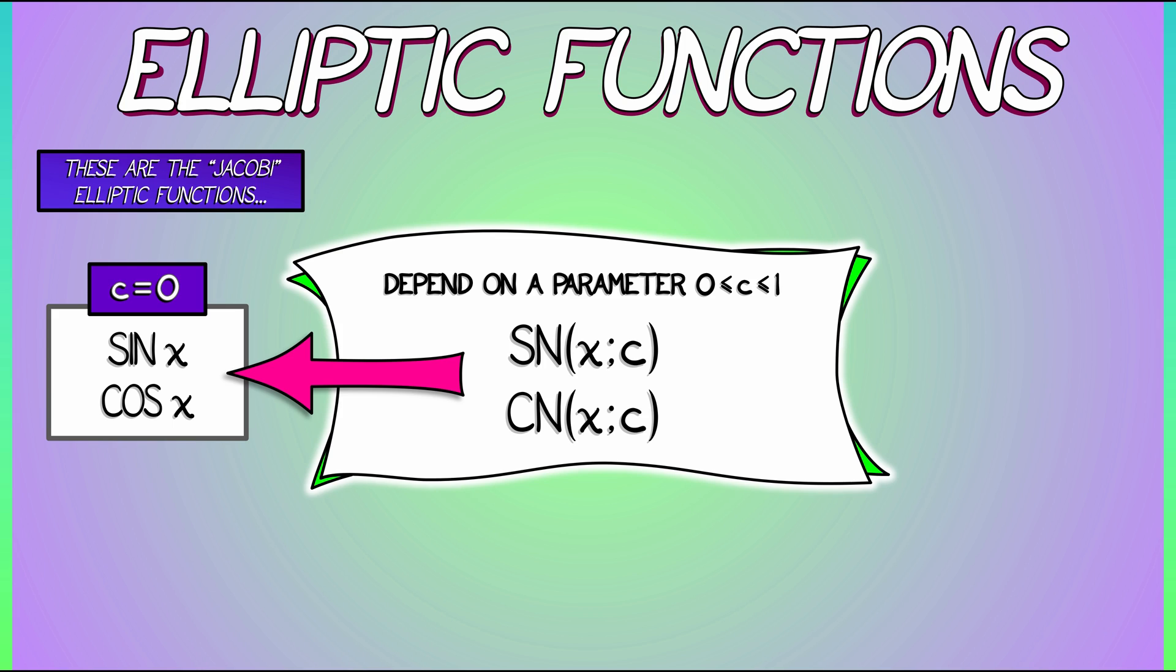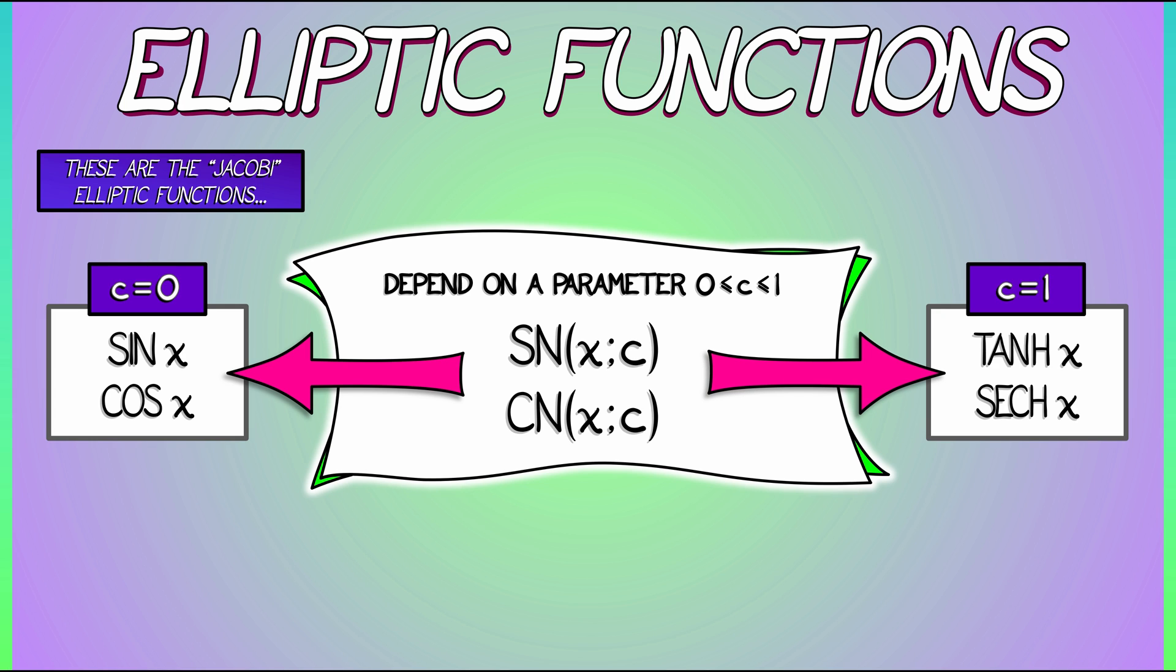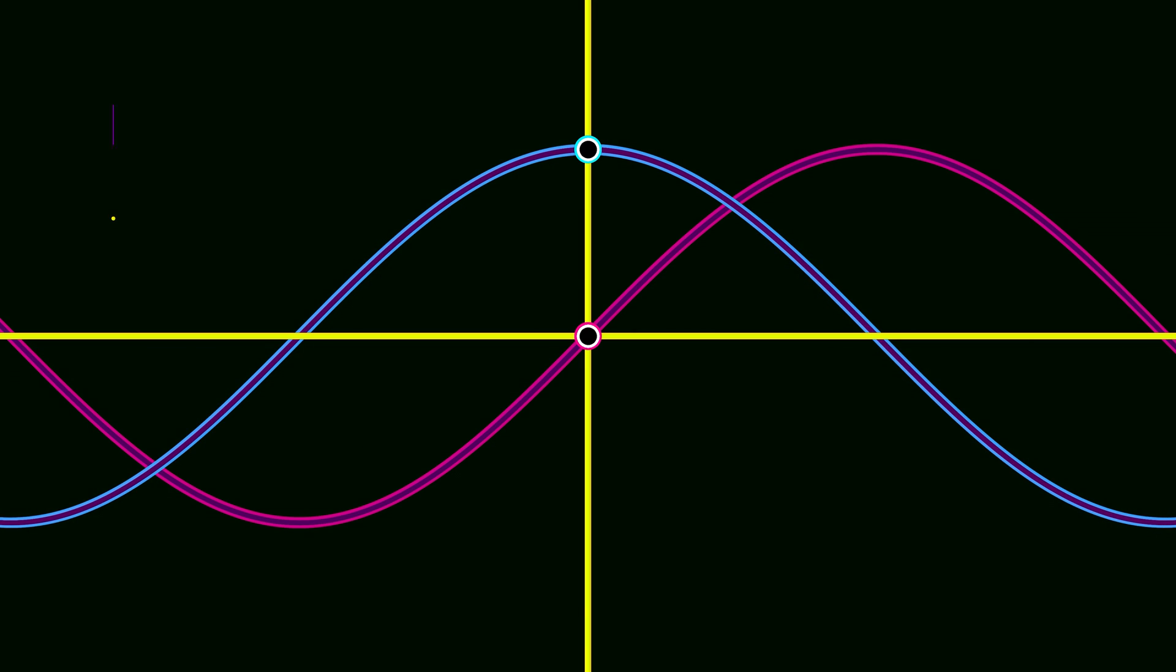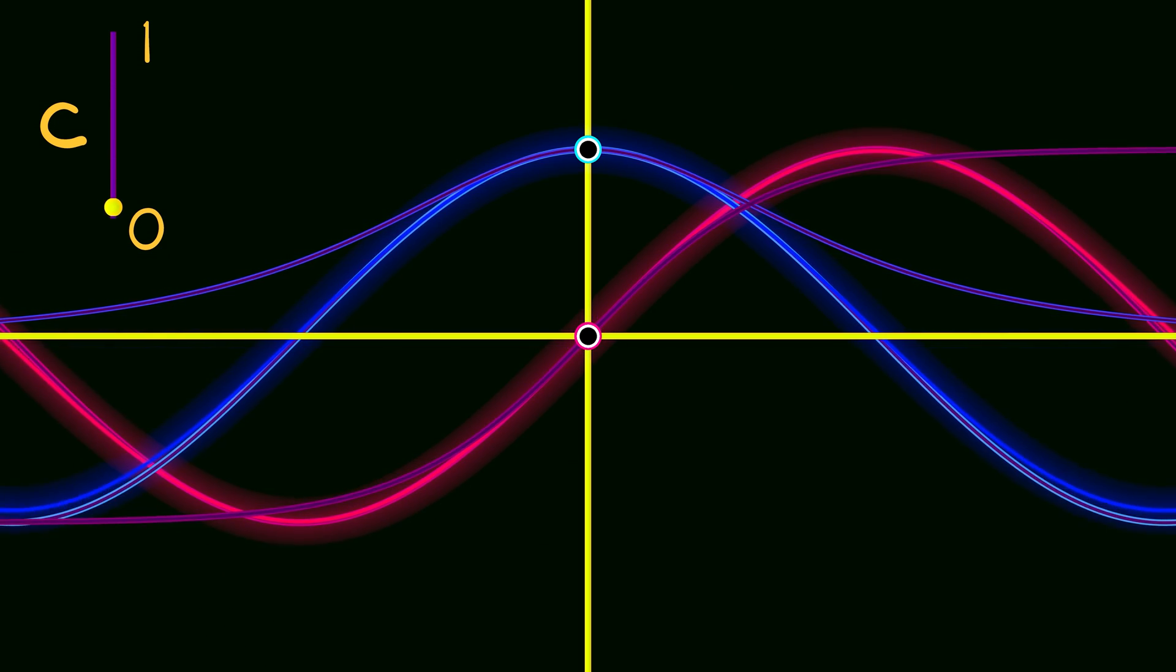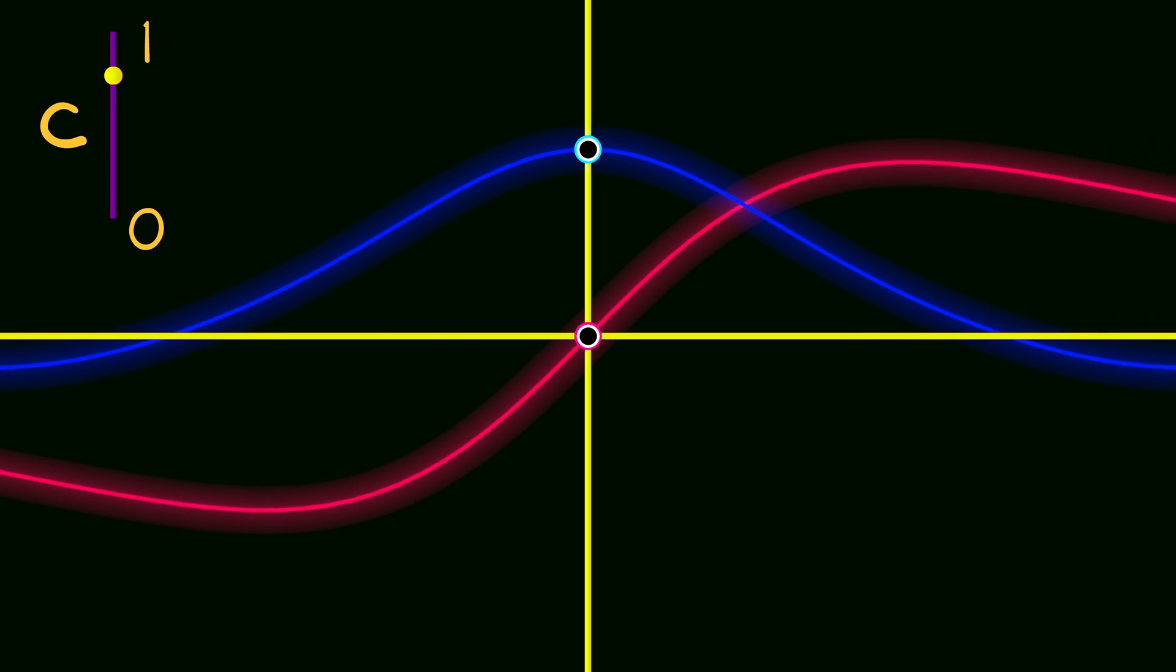And in fact, when c is 0, these collapse to the sine and cosine function, respectively. Well, what happens when I turn the dial from c going to 0 to c going to 1? Well, in the limit where c goes to 1, I get the hyperbolic functions, hyperbolic tangent and hyperbolic secant, respectively. So what this looks like, if you graph them out, is in the 1 limit, you have sine and cosine, right? That's when c equals 0. If you turn the dial up to c equals 1, you get hyperbolic tangent and hyperbolic secant. And then for a typical c in between, you're just going back and forth between these two. It's a nice, smooth interpolation.